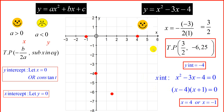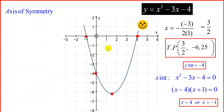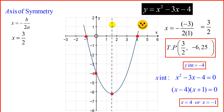We are now ready to draw our parabola — remember, we're trying to get a happy face. Summarizing: turning point (3/2, -6.25), y-intercept -4, x-intercepts 4 and -1. The axis of symmetry is the x-value of the turning point, using the formula x = -b/2a, which we found to be 3/2. Drawing that vertical line, x = 3/2 is the axis of symmetry, which cuts the graph into two equal parts.